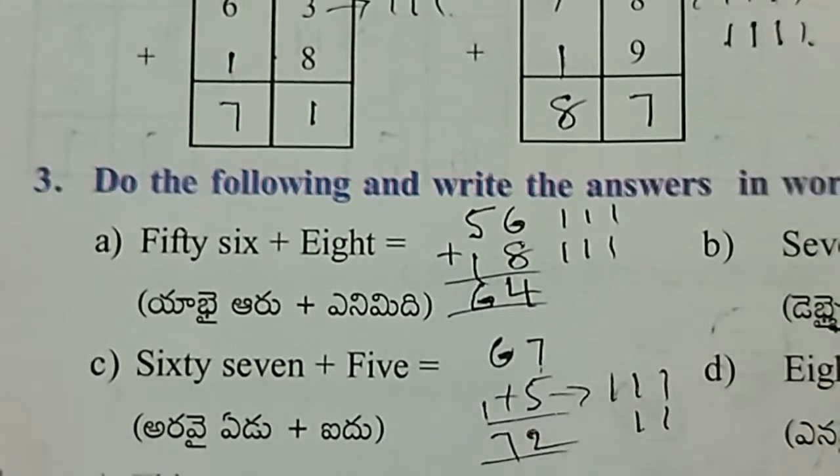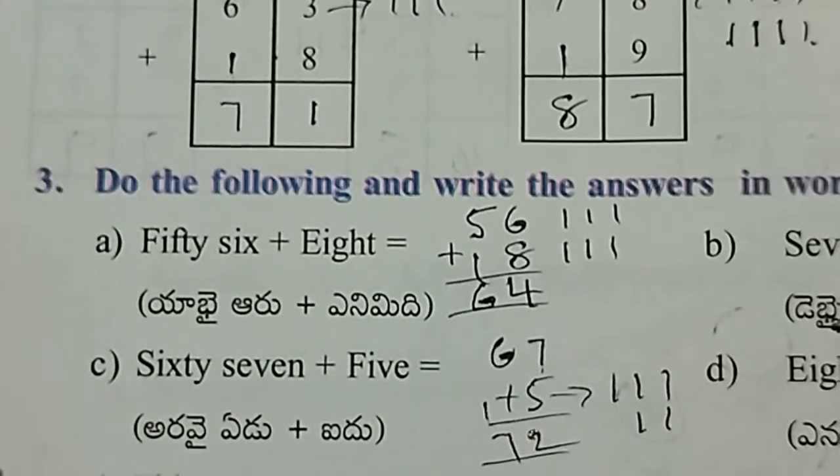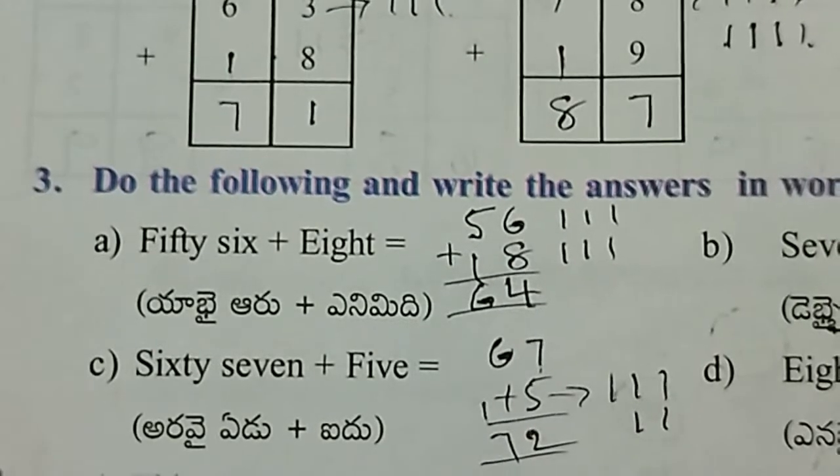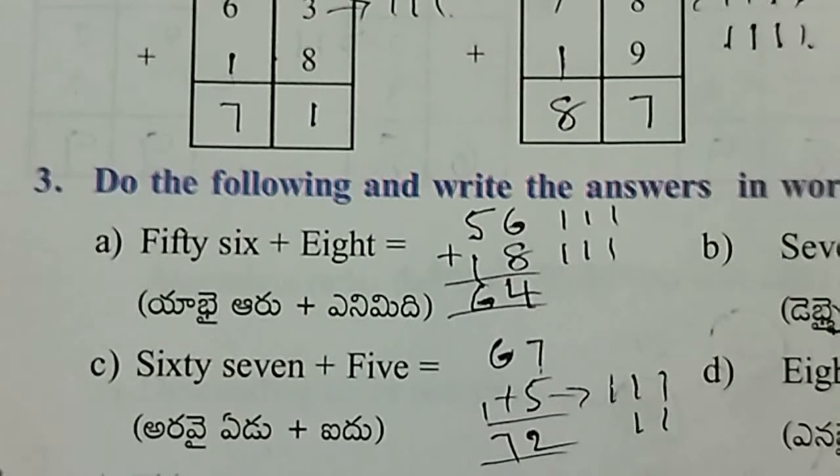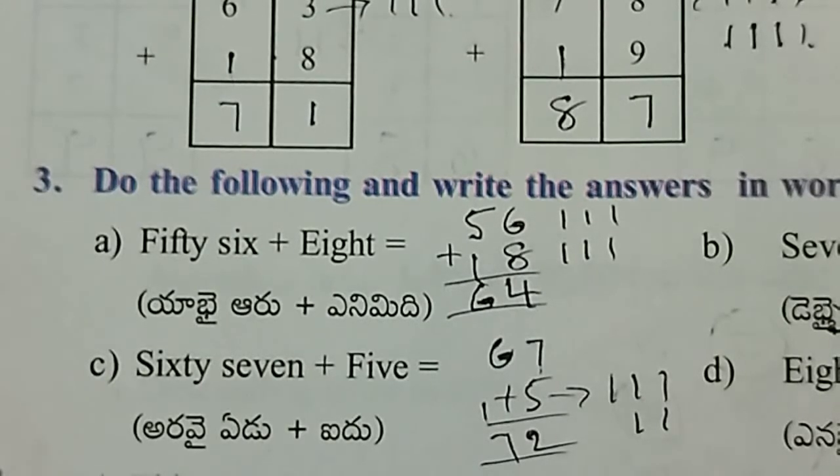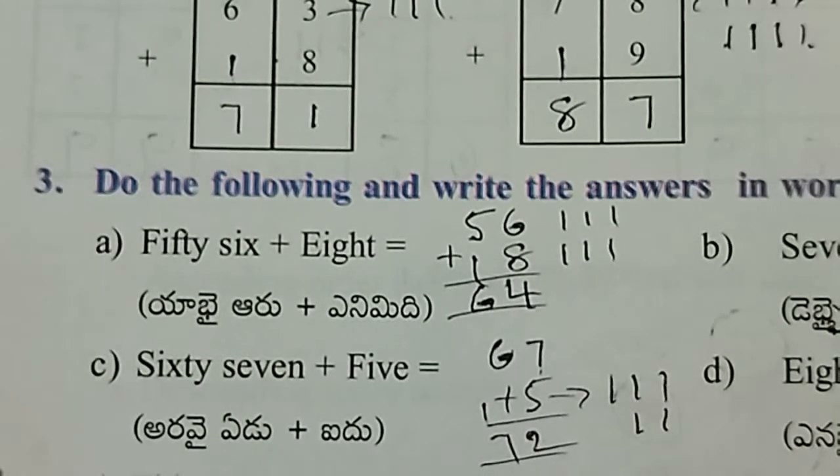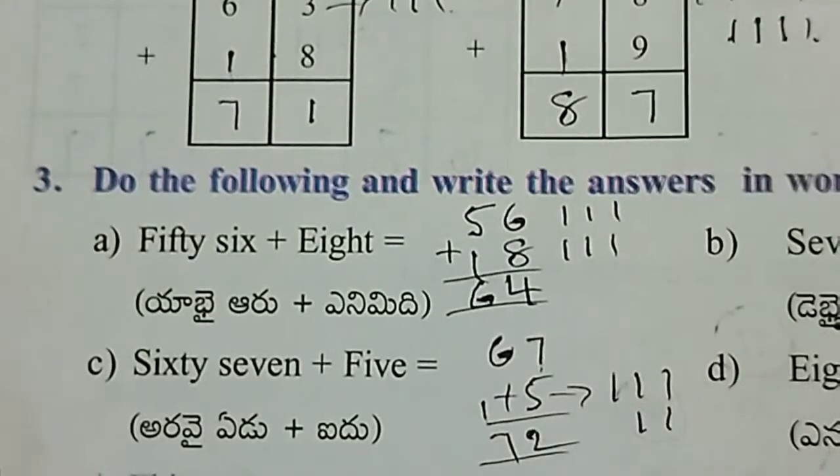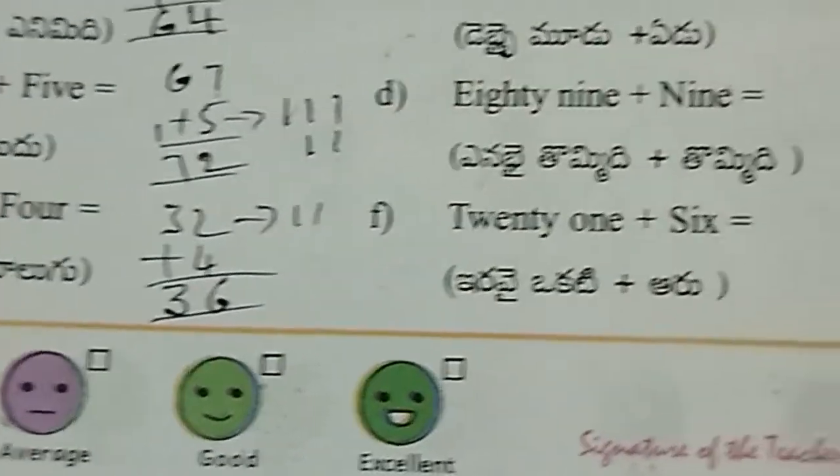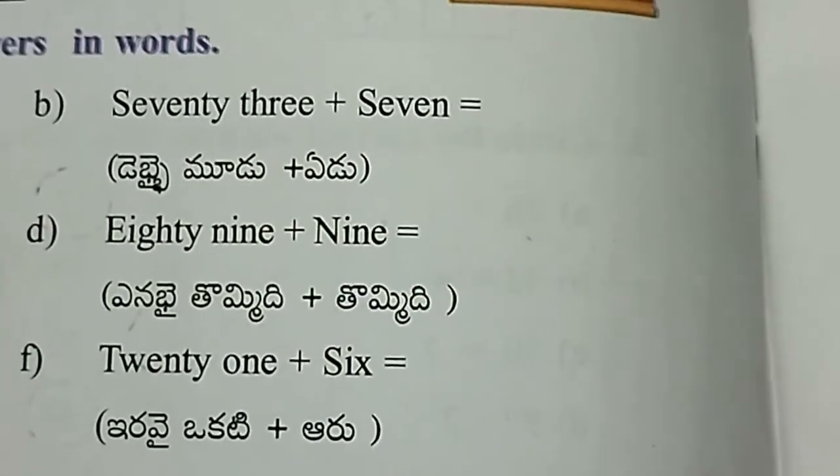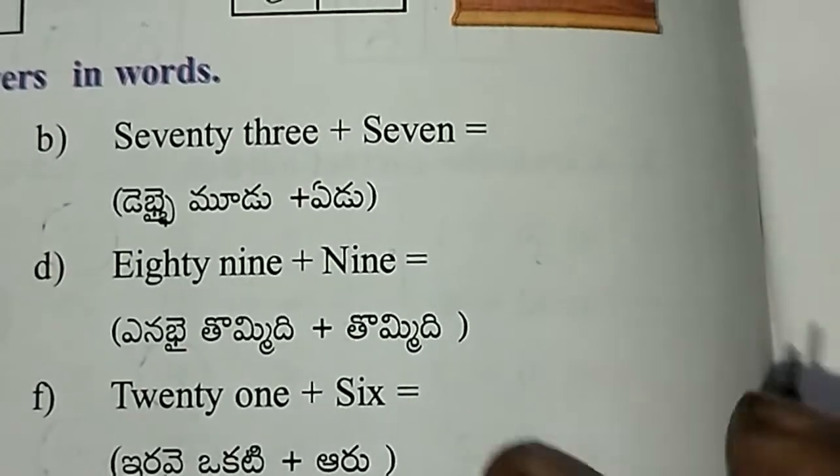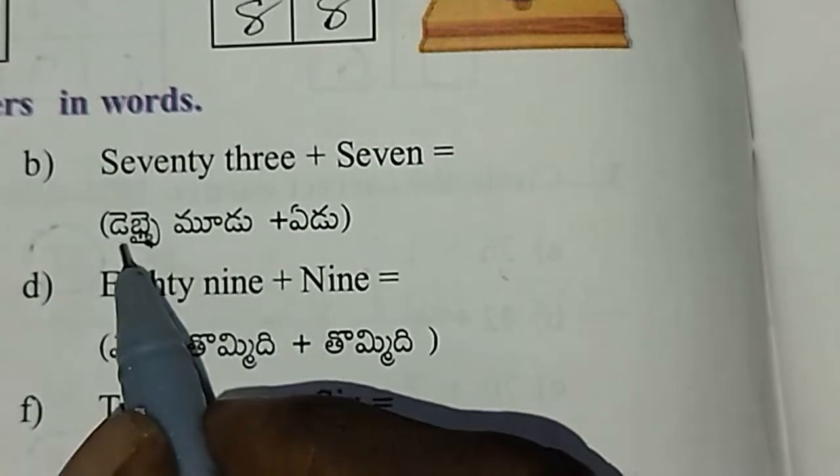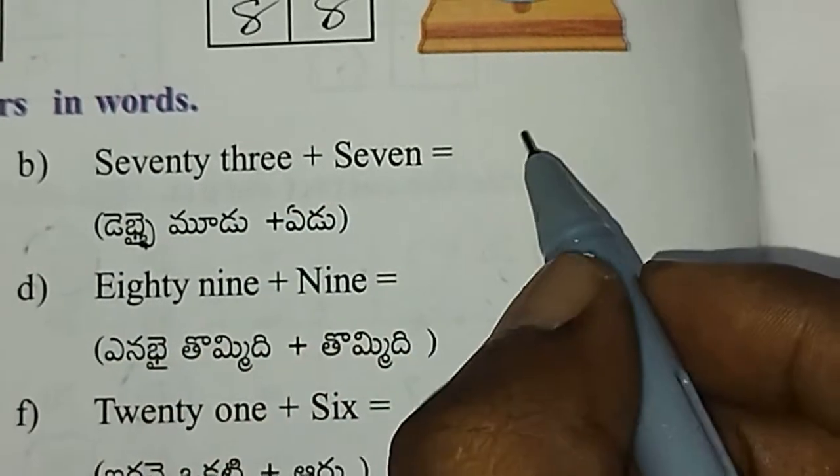Next, 32 plus 4. For 2 plus 4, that's 6. Draw 2 lines starting from 4. After 4 is 5, 6. Then 3 plus 1 is 4, giving us 46.